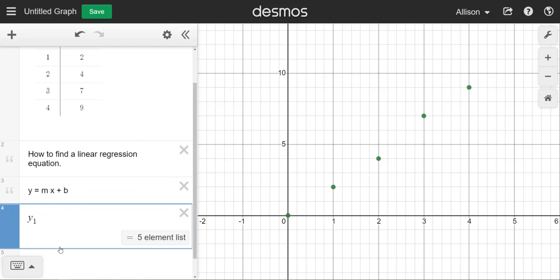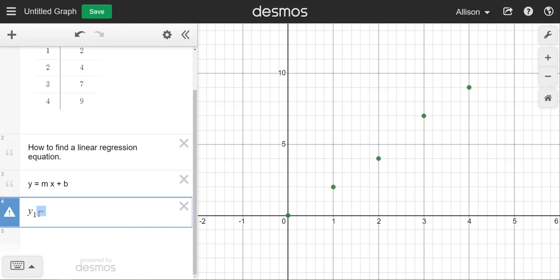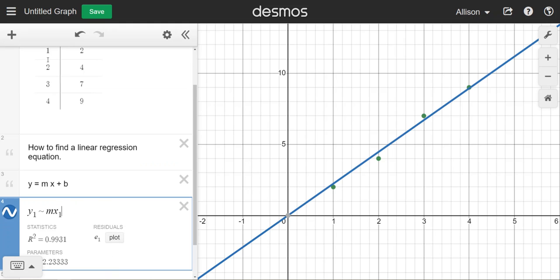So I'm going to change y to y1 so it uses the y column. I'm going to use the tilde key, which means approximate, making an approximate model that's going to go through these data points. I'm going to type in the letter m to let the equation calculate the slope for me based on x1 in the input column, and then plus b.